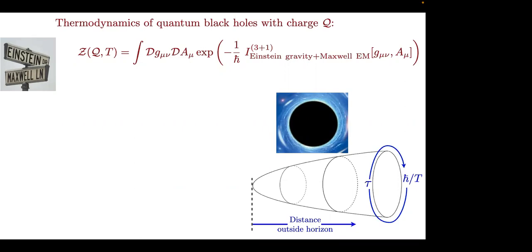There is an exact solution known — the Reissner-Nordström solution. There's a horizon, and this is a solution of a black hole with a horizon, with some charge and mass inside it. Everything outside is just vacuum — electric fields and gravitational fields, but nothing other than that.